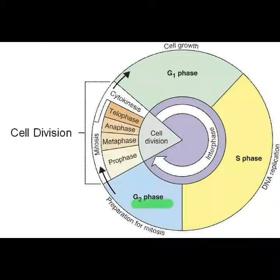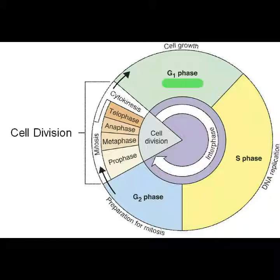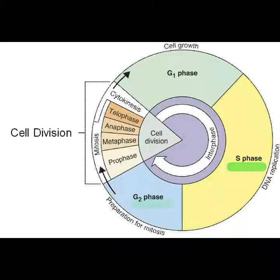Interphase is very important because of these three phases. During this phase, cells increase in size and synthesize new proteins and organelles. Followed by G1 phase is S phase, in which chromosomes are replicated and the synthesis of DNA molecules takes place. In this phase, molecules required for cell division are produced.